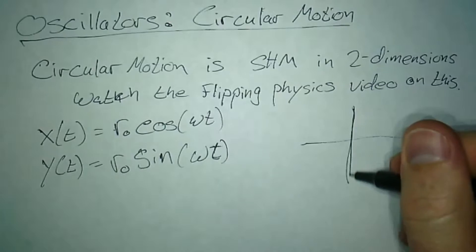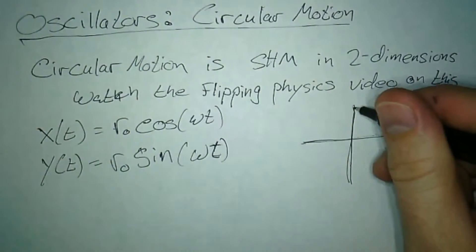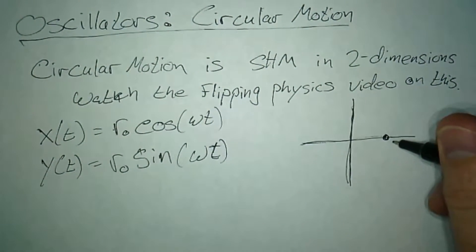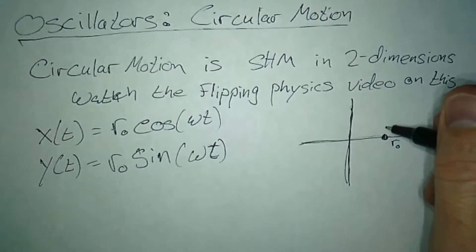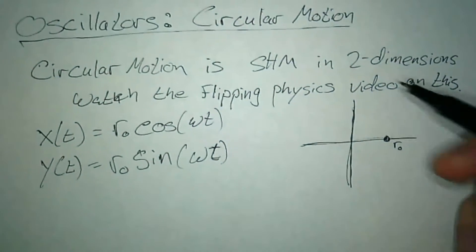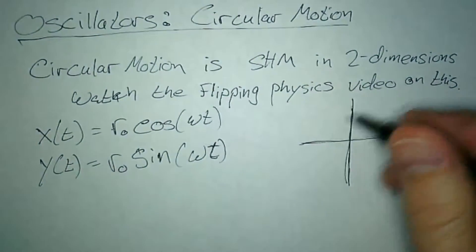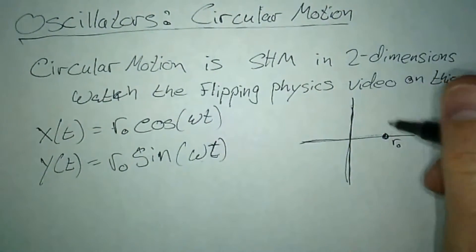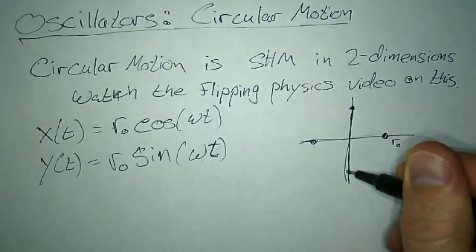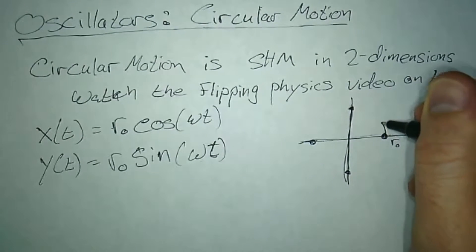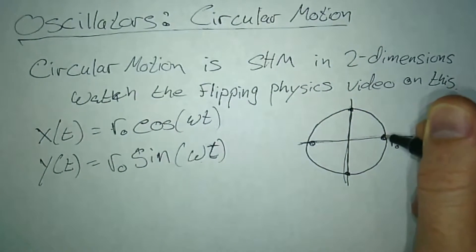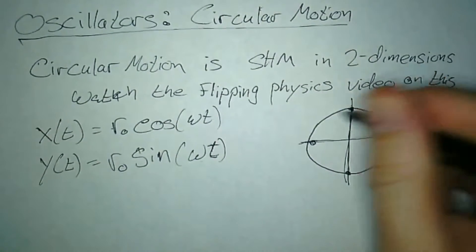If I track the position as a function of time, this should start here assuming r₀ is positive. Sometime later, when t works out so that this X term goes to zero, the sine term will be maximum. It's going to go to here, then to the other side, then down here. You are eventually going to track yourself a circle.